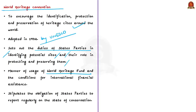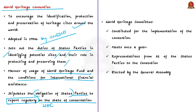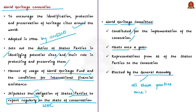The convention explains how the World Heritage Fund is to be used and managed, and under what conditions international financial assistance may be provided. State parties are obligated to report regularly to the World Heritage Committee on the conservation status of world heritage sites in their jurisdictions. The World Heritage Committee was constituted for the implementation of this convention. It meets once a year and consists of representatives from 21 state parties, elected by the General Assembly. The General Assembly, which includes all state parties, meets once every two years to elect committee members, examine fund accounts, and decide on major policy issues.